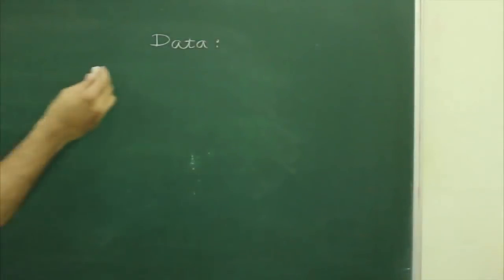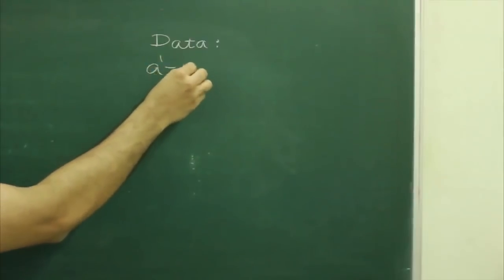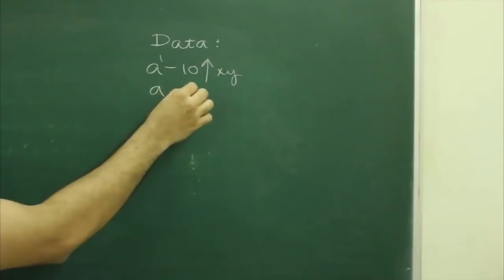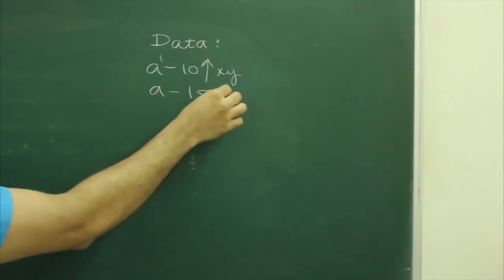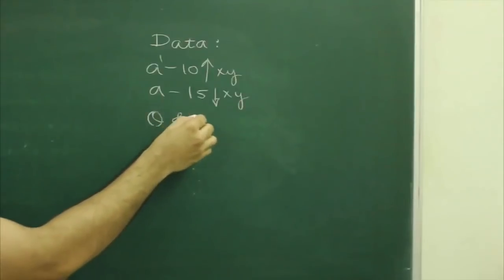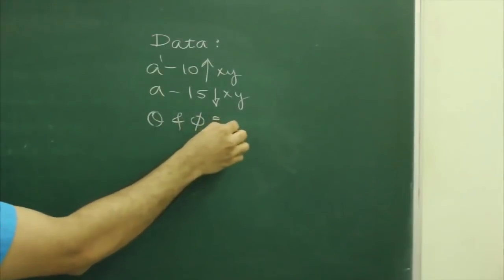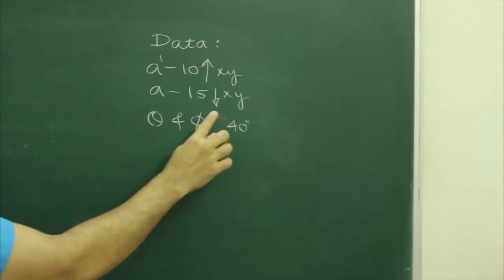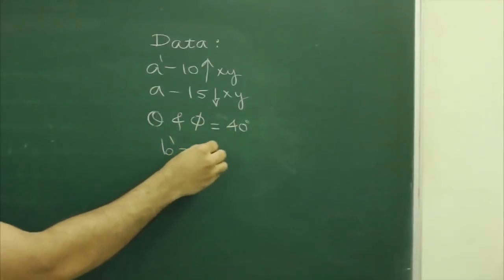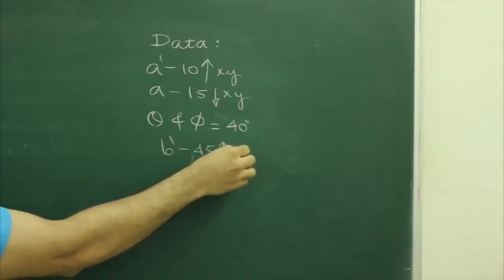Now we will write the given data: A dash 10 mm above xy, A 15 mm below xy, and reference angles theta and phi both are 40 degrees, and B dash 45 mm above xy.